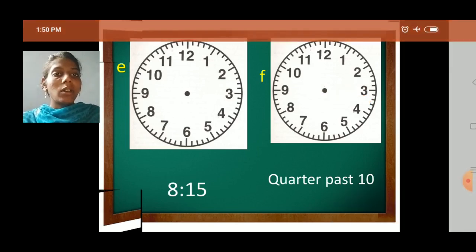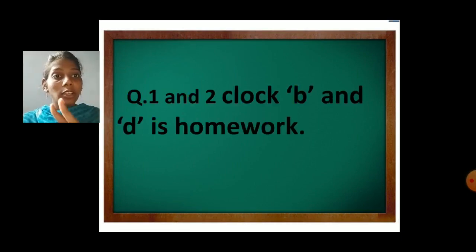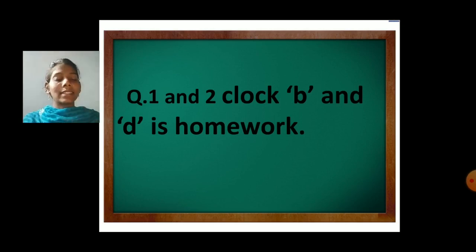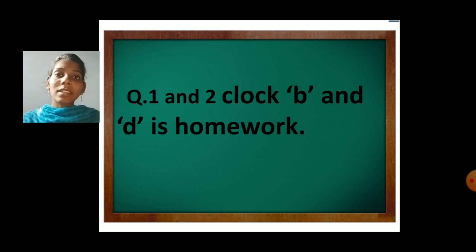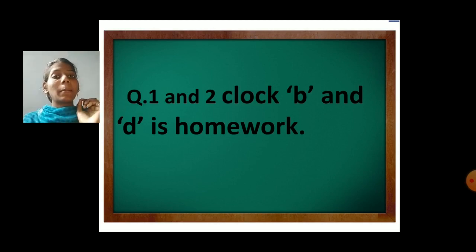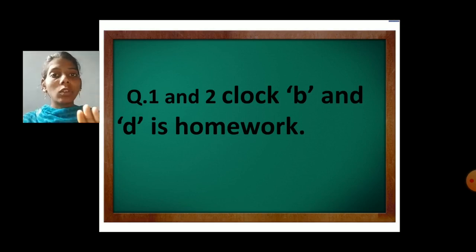Question 1 and 2, clocks B and D are your homework. We divided the clock into 4 parts and finished the first quarter part. Now you know how to read the time and how many minutes a clock has. Tell me — how many minutes does a clock have? 60 minutes. The minute hand is faster than the hour hand. So 1 hour equals 60 minutes. And how do we calculate the minutes? By multiplying the number by 5. Do practice at your home and complete your homework. Thank you.